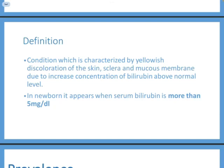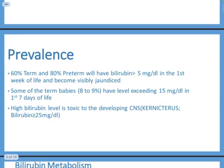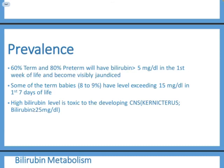Jaundice is one of the most common manifestations we face in practice. It is very common in both term and preterm newborns, particularly in the first week of life. Physiological jaundice does not tend to appear in the first 24 hours of life. If a newborn develops jaundice in the first hours of life, this is unlikely physiological — it is most likely pathological, and you need to find the cause and manage accordingly.